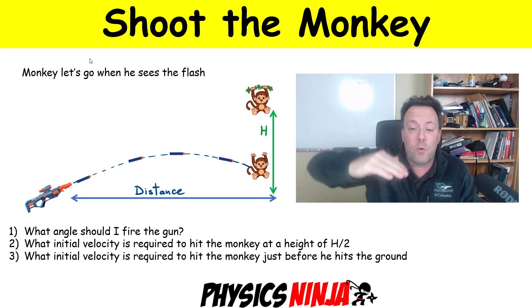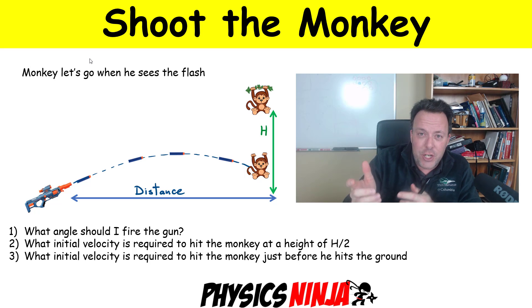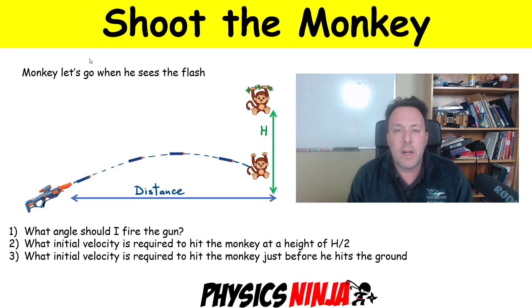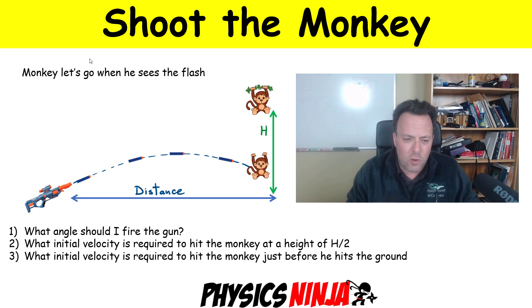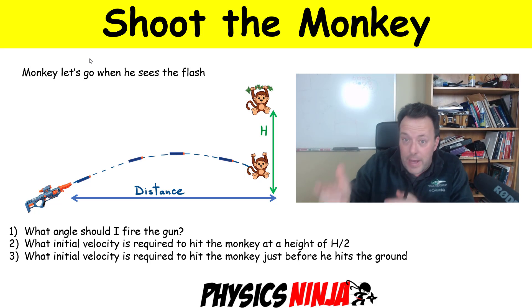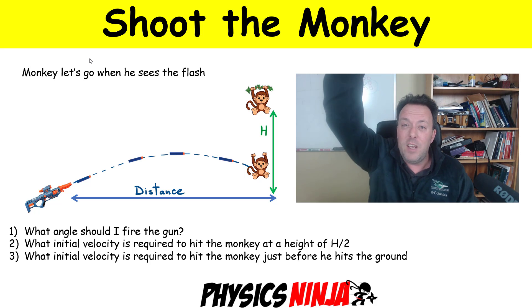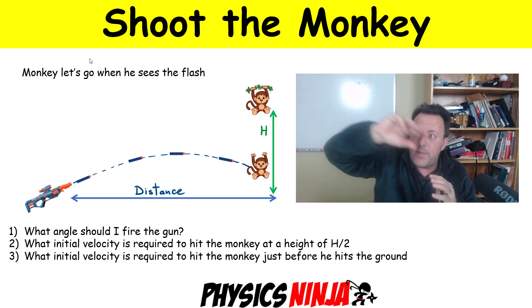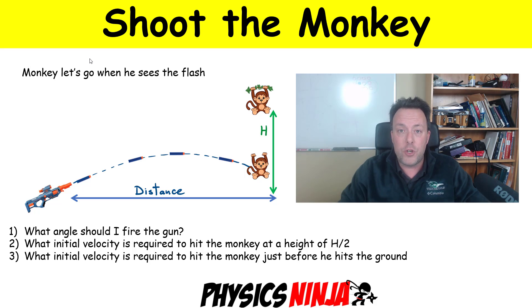The monkey is up above the ground some distance H. What is going to happen is: as soon as there is a shot, a flash gets emitted from the gun and the monkey will let go at that exact instant in time in order to try to avoid being shot. The question is: at which angle should you fire the gun in order to ensure that you're going to hit this monkey? The monkey is falling straight down and you're firing this Nerf bullet, which is going to follow some projectile motion. So what is that initial angle that you should fire the shot?